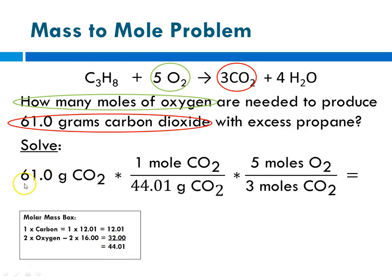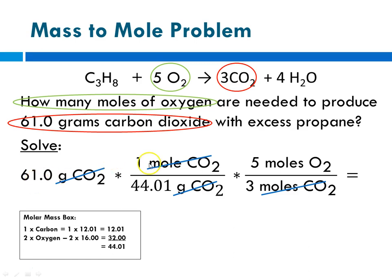Now for the setup. Beginning with our given — 61 grams of carbon dioxide — times the molar mass conversion: 1 mole of carbon dioxide per 44.01 grams. Since we were given grams, the molar mass must have grams in the denominator. Then multiply by the mole ratio: 5 moles of oxygen for every 3 moles of carbon dioxide. Grams of carbon dioxide cancels, moles of carbon dioxide cancels, and we're left with moles of oxygen. 61 × 1 ÷ 44.01 × 5 ÷ 3 = 2.310.